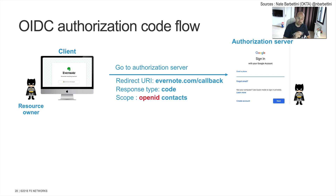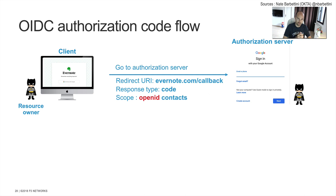So when Batman clicks on 'Connect with Google,' Evernote redirects Batman to the Google authorization server — OAuth authorization server — at accounts.google.com. Batman arrives on the Google authorization server and authenticates. As you can see in the request, there is information regarding the way to connect and the way to come back to Evernote. The response type is 'code' — very important. With the authorization code flow, we exchange a code for a token.